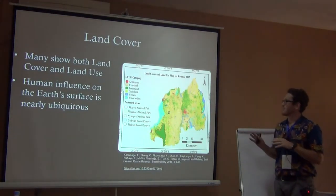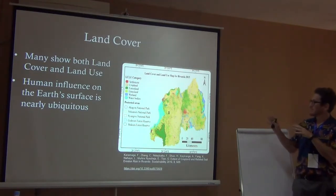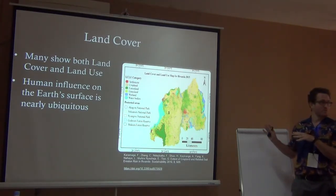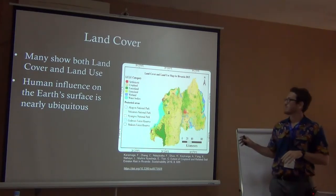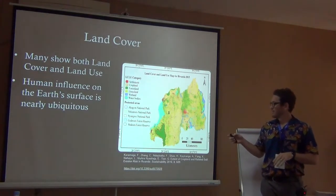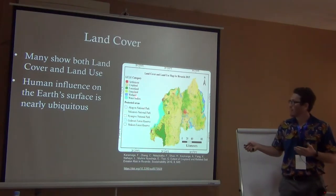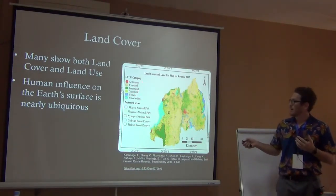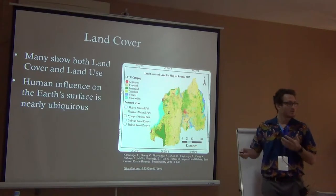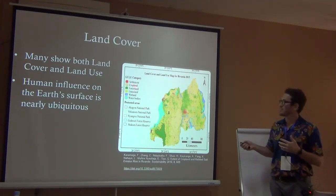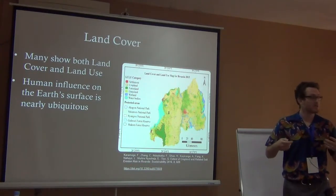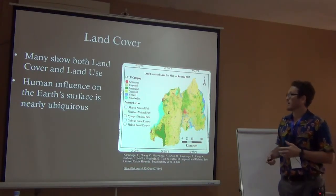So land cover — this is one of those situations where it's a little bit of a mix between both. This is for Rwanda for 2015. We have cover types: wetland, forest land, water bodies — those are typical types of land cover. But then we also have land use types like cropland and settlements — the different ways we're actually using the land.